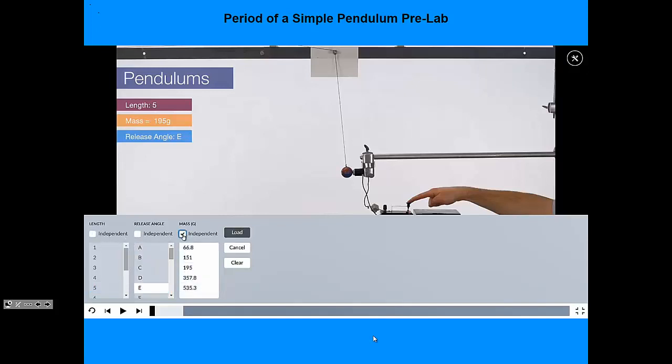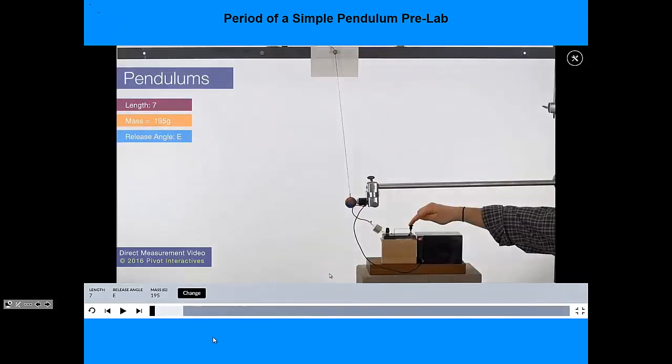Note that when we hit the Independent button, we can now choose any of these masses, but it locks down a lot of the release angles and the lengths. I will tell you on your lab sheet what angle and length I want you to use so that we're all doing the same video. So the ones that we've got to hold constant here, I'll tell you about in a minute. So here I'm picking a mass and then hitting Load. That loads the video.